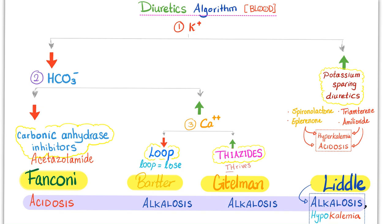There is an urban myth among students that goes like this: Fanconi syndrome is the same as acetazolamide; Bartter syndrome is as if you're taking a loop diuretic; Gitelman syndrome is as if you're taking a thiazide; and Liddle syndrome is as if you're taking a potassium-sparing diuretic. Well, the first three are true, but the last is the exact opposite. Liddle syndrome causes alkalosis, but potassium-sparing diuretics cause metabolic acidosis. Moreover, Liddle syndrome causes hypokalemia, but potassium-sparing diuretics cause hyperkalemia. In fact, you treat Liddle syndrome with potassium-sparing diuretics — this raises your potassium and corrects the alkalosis.